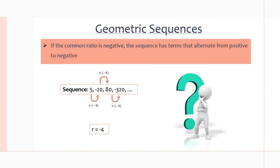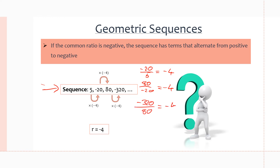One more example where the common ratio is negative. If the common ratio is negative, the sequence has terms with alternating signs. Multiplying by a negative common ratio gives us positive 5, negative 20, positive 80, negative 320 — but the ratios are still the same. Negative 20 over 5 gives negative 4, 80 over negative 20 gives negative 4, and negative 320 over 80 gives negative 4. So our common ratio is negative 4. The signs alternate because multiplying a positive by a negative gives a negative, and a negative by a negative gives a positive.